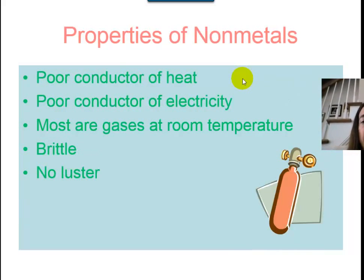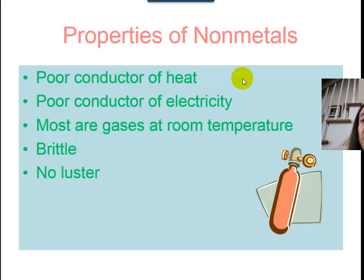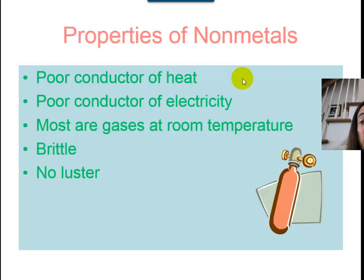Nonmetals are really the opposite of metals — they're not good conductors of heat and electricity. In fact, most of them are gases at room temperature. Think about oxygen and chlorine; those are definitely gases. One example of a nonmetal that is not a gas at room temperature is bromine — it's actually a liquid. Nonmetals are brittle, which means they crumble; they're not malleable or ductile like metals, and they don't have luster since they're generally gases.